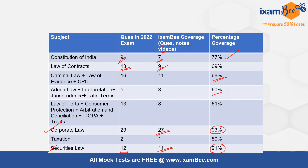Similarly, in criminal law we provided 68% coverage. For administrative law, 60%, and for law of torts and consumer protection, 61%. That means around 80 questions out of the 100 questions you could have attempted easily if you had studied our course thoroughly. Added to that, we always mention that apart from our course offerings, you should also read bare acts.